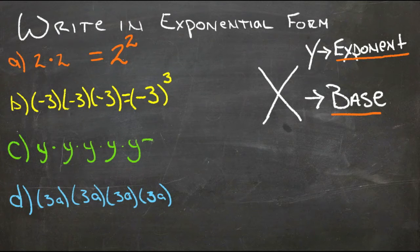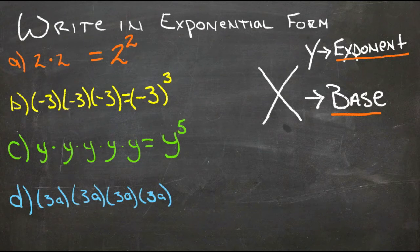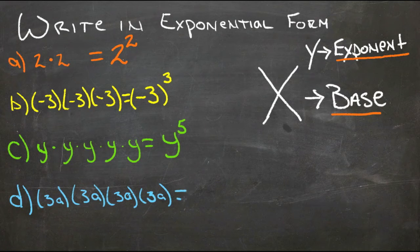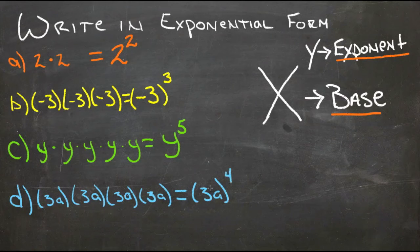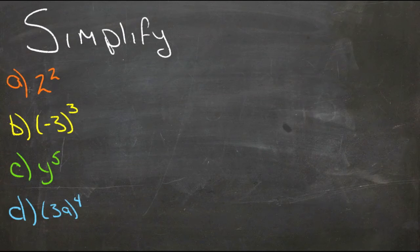For example C, y is our base and 5 is our exponent because it's y multiplied by itself five times. For D, we have 3a to the fourth power — the number of times 3a is being multiplied by itself.